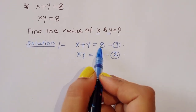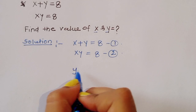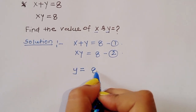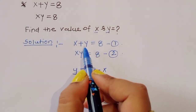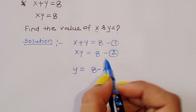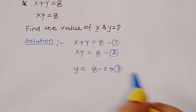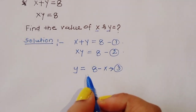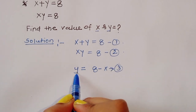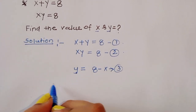From equation 1, x plus y is equal to 8, so we can write y is equal to 8 minus x. This is equation 3. Now we substitute the value of y into equation 2.